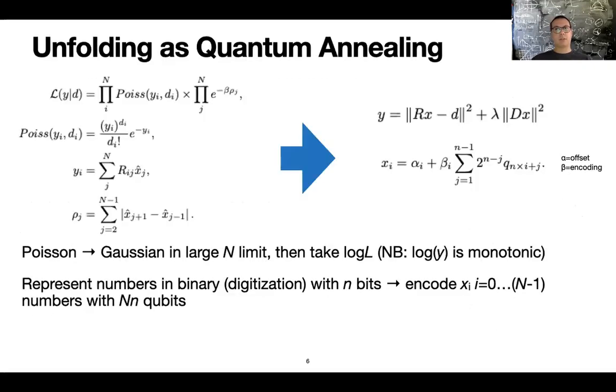For example, most of the times the number of entries per bin is pretty large. So the Poisson distribution that represents a counting experiment per bin can actually be promoted to a Gaussian. And if you take the logarithm of this function, you basically have a quadratic function that is much easier to handle in the realm of quantum annealing.